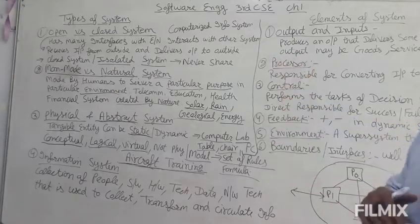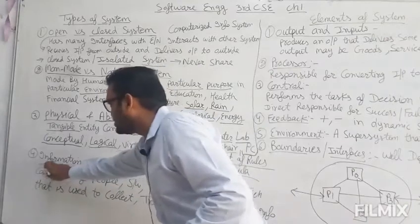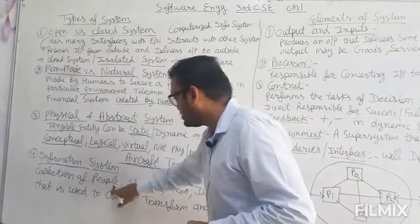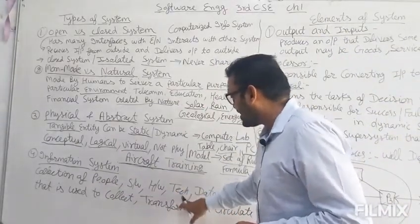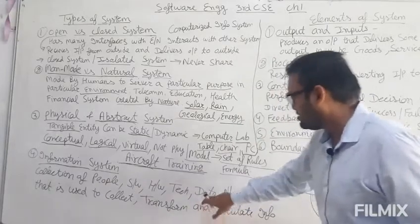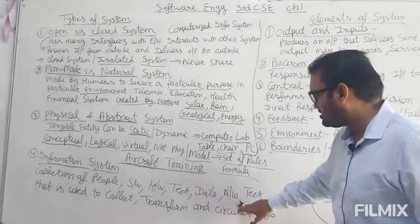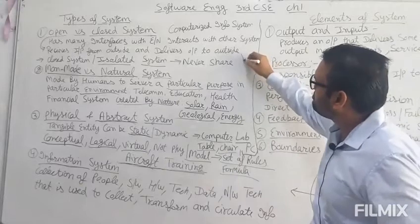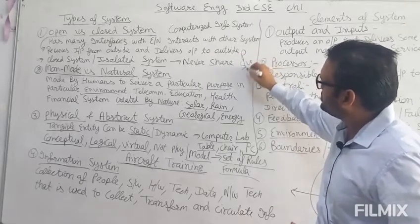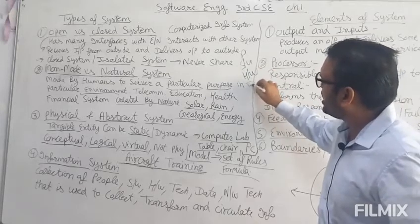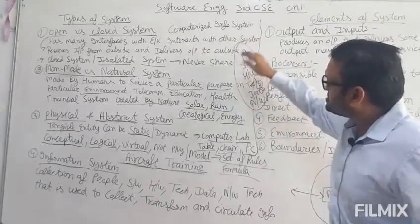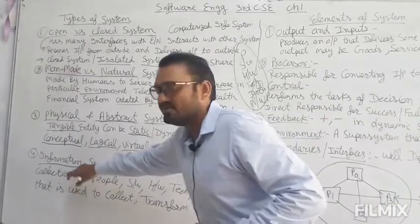Number four is information system. Information system is a collection of people, software, hardware, technologies, data, resources, and network technology. This combination is called an information system.